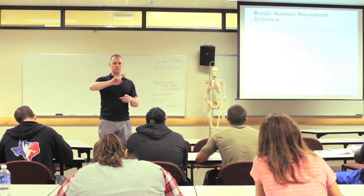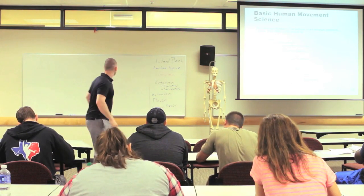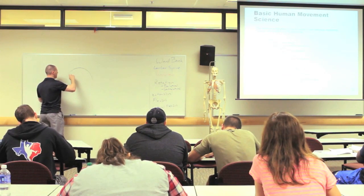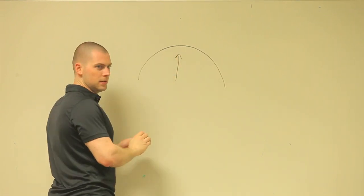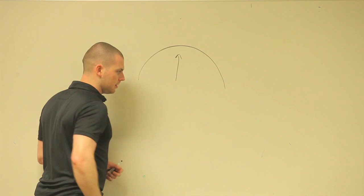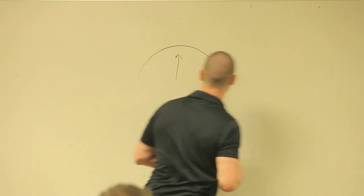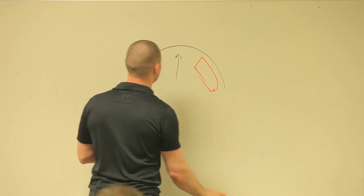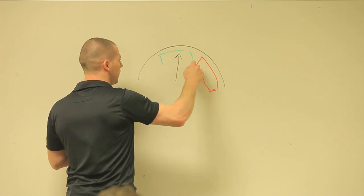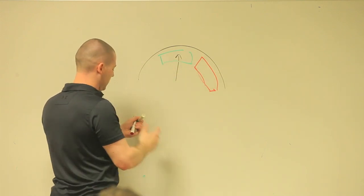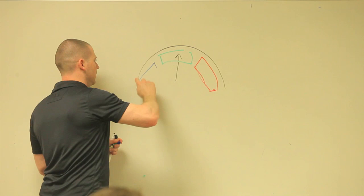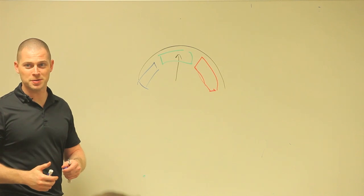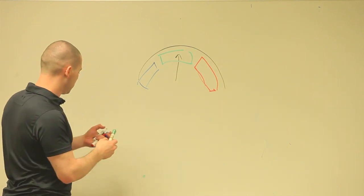Think about one of those old-school valve gauges with a little needle — over here would be like warning level, this is okay, and this is calm. That's your stretchometer; that's your muscle spindle. Muscle spindle equals stretchometer.